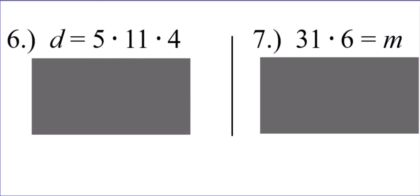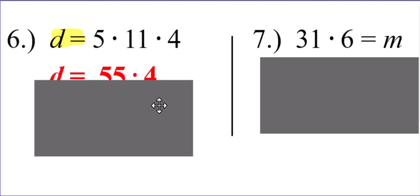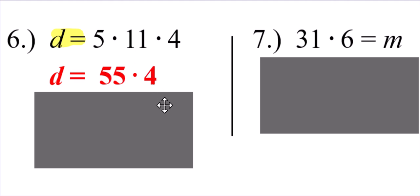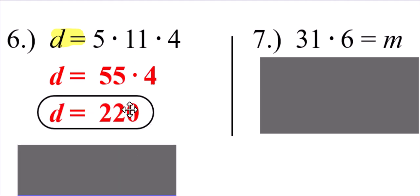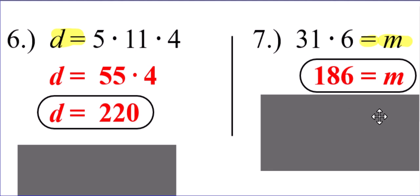Problem number 6: what's happening to the variable? Nothing — it's just by itself. So 5 times 11 gives you 55, and 55 times 4 is 220. You also could have done 4 times 11 to get 44, then 44 times 5 to get 220. That's the beauty about multiplication — you can go in any order you want because of the commutative property. Problem number 7: what's happening to the variable? Do not be fooled — the variable is way over here, by itself. There's nothing happening to it. So take 31 times 6, get 186, and you are done.